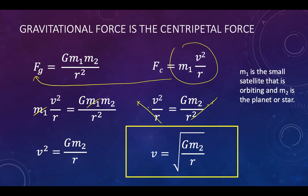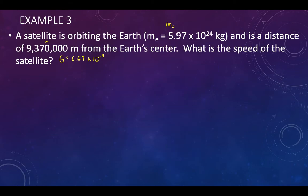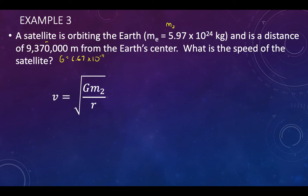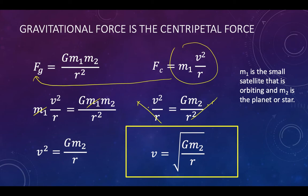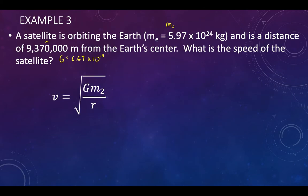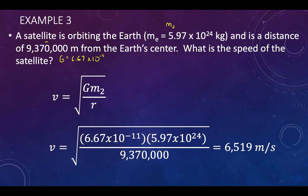Make sure you have that derivation written down. Using that same satellite at a distance of 9,370,000 meters from Earth, we can solve directly for orbital speed using v = √(G·M/R), which yields a velocity of about 6,000 meters per second. That's a pretty substantial velocity.